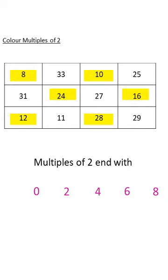And last number, 29. Here it ends with 9, so it is not a multiple of 2.